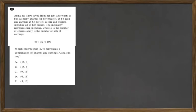For question 3, Aisha has $100 saved from her job. She wants to buy as many charms for her bracelet at $4 each and earrings at $5 per set as she can without spending all of her money. The equality representing her spending, where X is the number of charms and Y is the number of sets of earrings, is 4X plus 5Y is less than 100. The question is asking which ordered pair of X and Y below represents a combination of charms and earrings Aisha can buy.